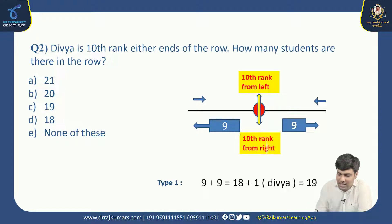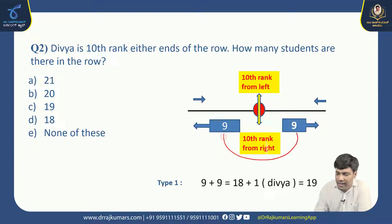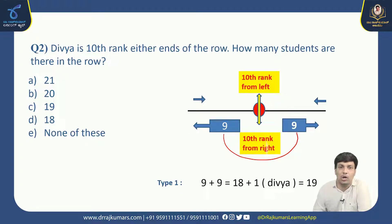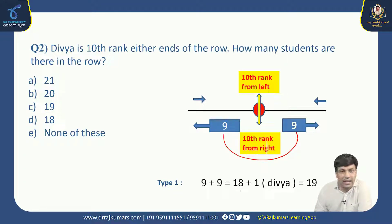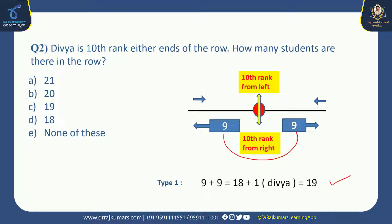Excluding Divya, there are 9 students behind and 9 students after her. We need to add 9 plus 9, which is 18, and include Divya only once since Divya's count is twice in the problem. So 9 plus 9 is 18, and 18 plus 1 equals 19. The total number of students in the row is 19 members.